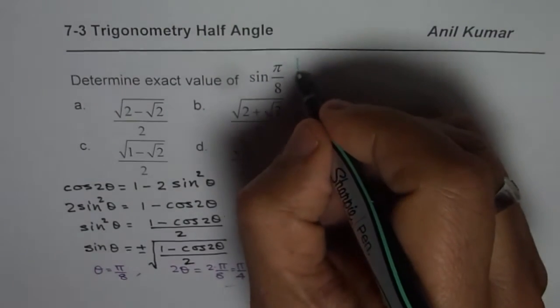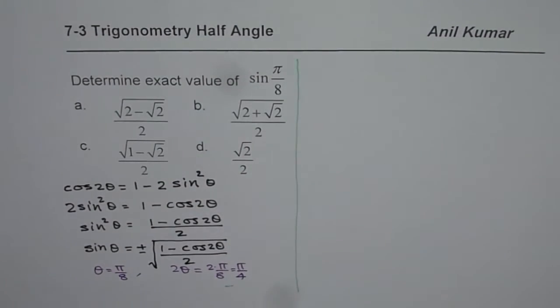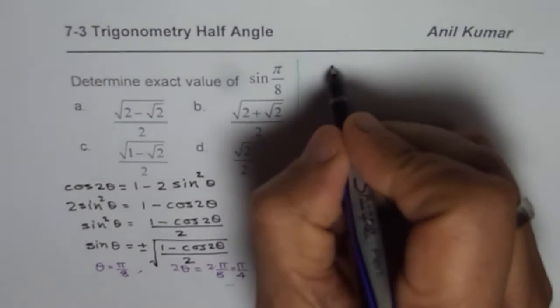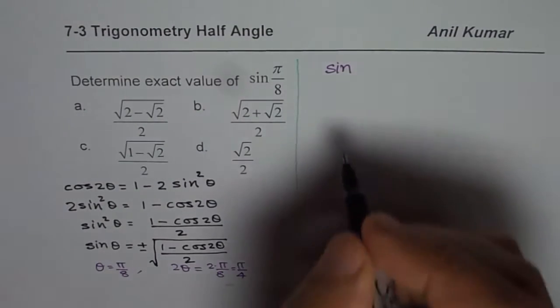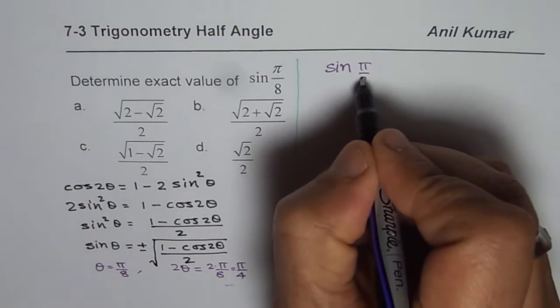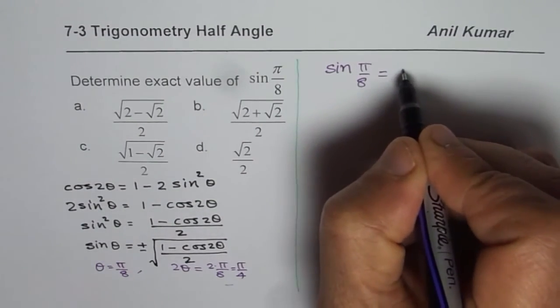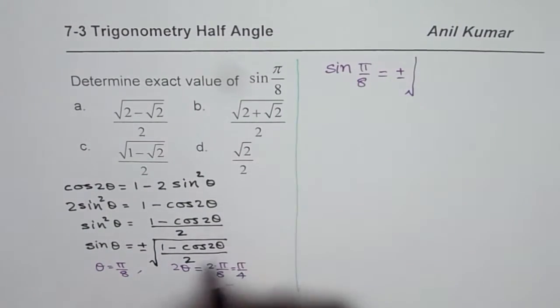Let us do our calculations now on the right side and find the exact value. So the formula for us is, now let us apply this formula and instead of theta let me write pi by 8. So we get sine pi by 8 equals to, so let us begin with plus minus itself,